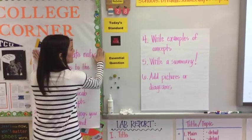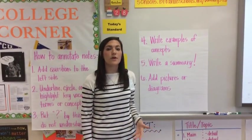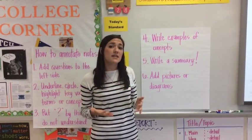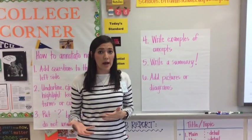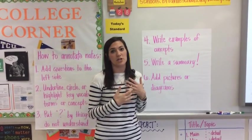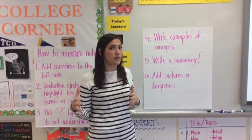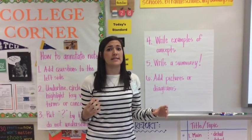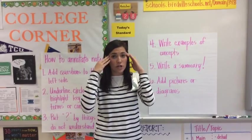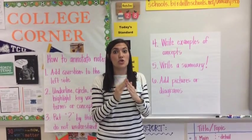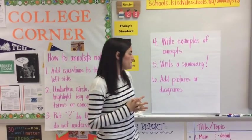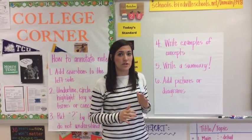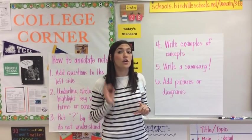The next thing that I would recommend when you are annotating notes is I would write examples. So today we're going to talk about mutations. If you hear an example that you like or a disease that one of those mutations causes, you might want to write that example down by that mutation. So be sure to use examples to connect it to real life. Number five, write a summary. At the end of your Cornell notes, you should always be writing summaries. That's taking the information and putting it into your words and kind of wrapping it all up so that you know that you understand the main idea of the notes for that day. A great way to write a summary is to answer your essential question. So if you look at your essential question, try answering it in your summary. And if you can't do that, you'll want to talk to your teacher.